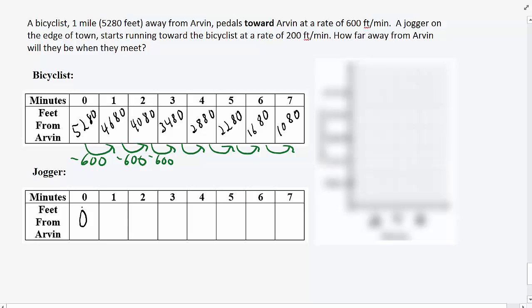The jogger starts 0 feet from Arvin and gets 200 feet further away every minute.